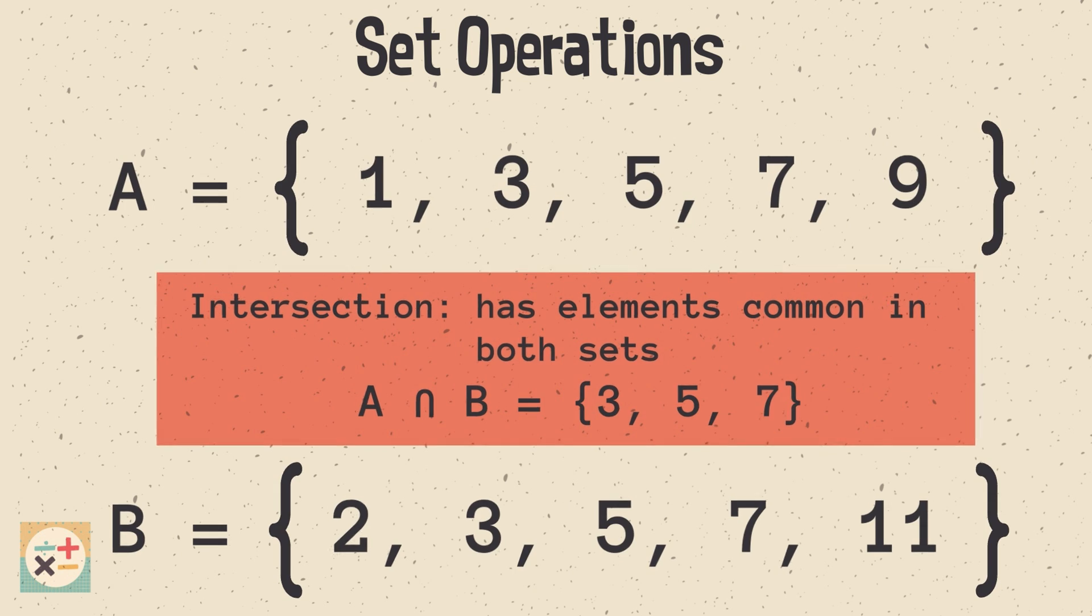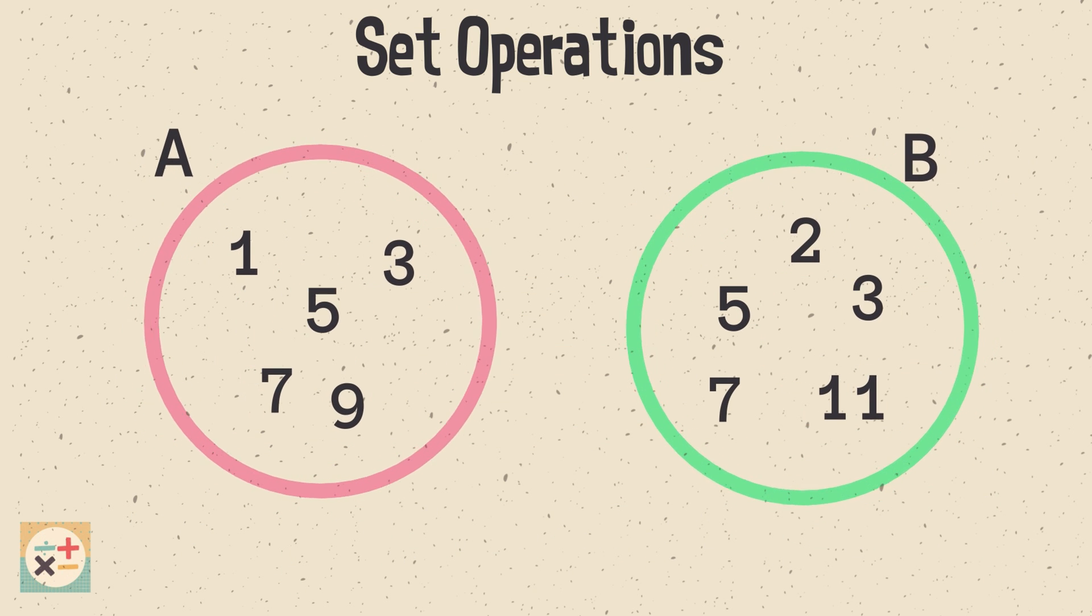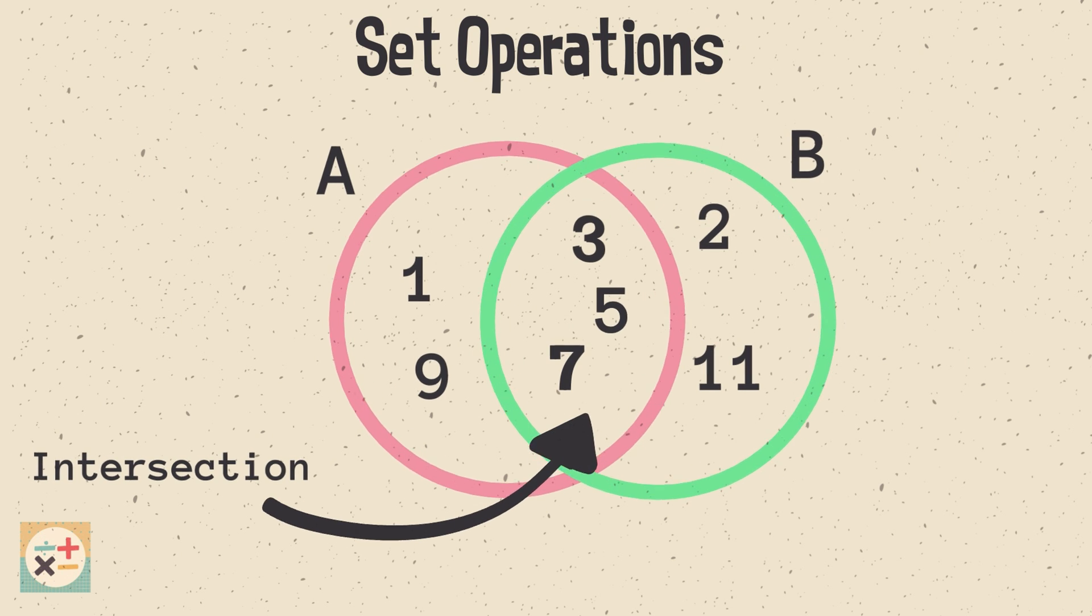Again, let's look at the process of set intersection with a Venn diagram. Think of it as finding the common elements between A and B. This is useful in various real-world scenarios like finding shared characteristics in a group of people.